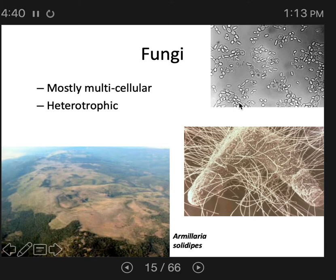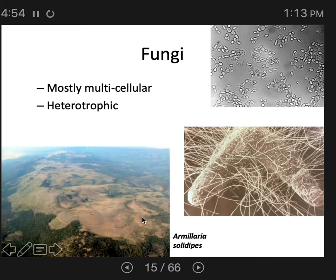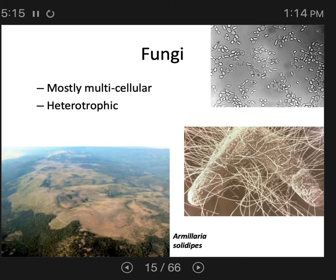The largest organism on the planet is also a fungus, and that is certainly multicellular. In this aerial photo on the bottom left, you can see a large swath of land where the trees won't grow — barren land. That's because this fungus, called Armillaria — or as it's commonly known, the humongous fungus — lives underground and parasitizes tree roots, and is responsible for the entirety of tree death in this photo.